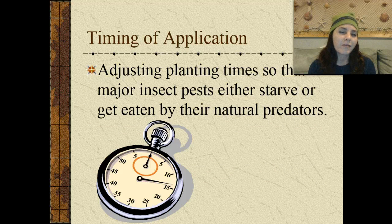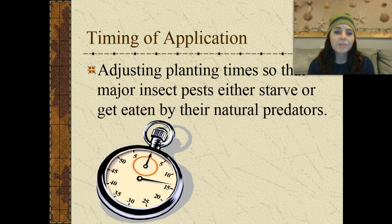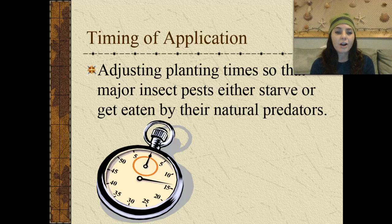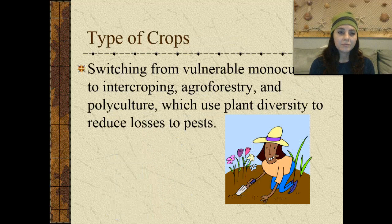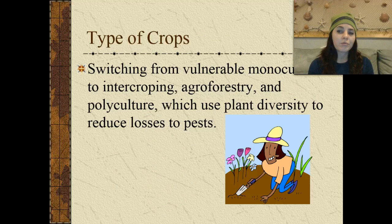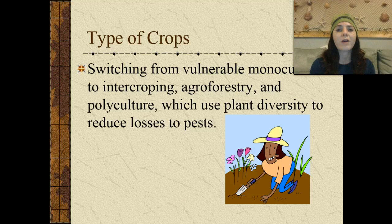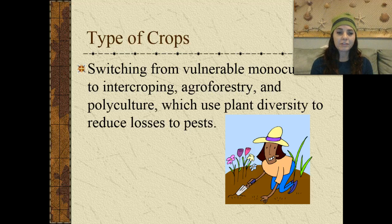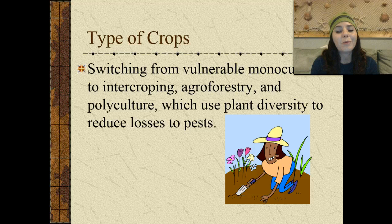We also have the timing of the application — adjusting planting times so that major insect pests either starve or get eaten by their natural predators. We have different types of crops: switching from vulnerable monocultures to intercropping or agroforestry, as well as polyculture, which uses plant diversity to reduce losses to pests.